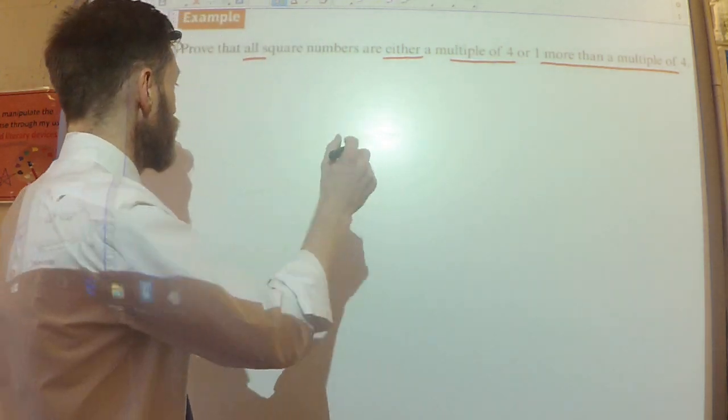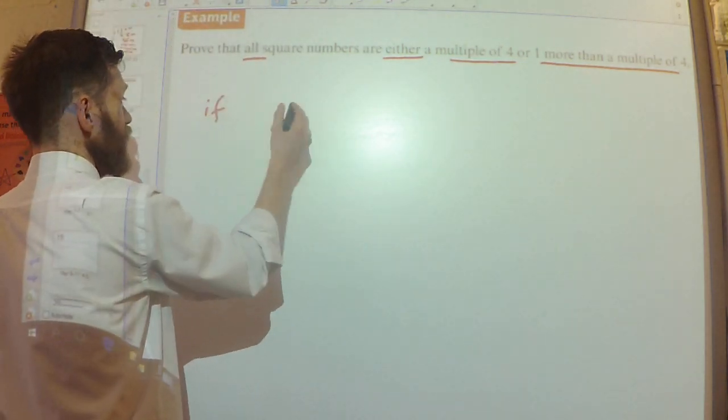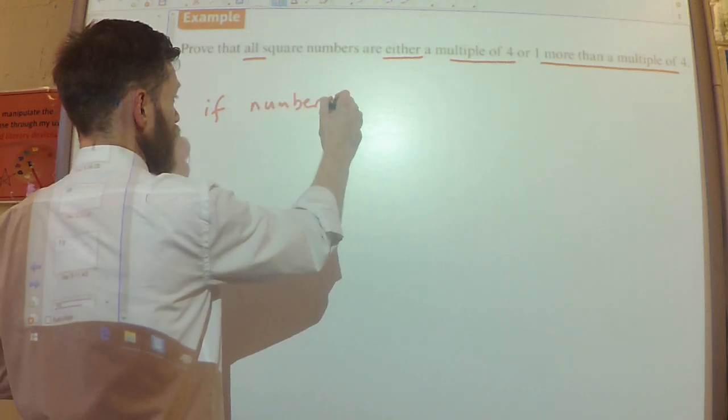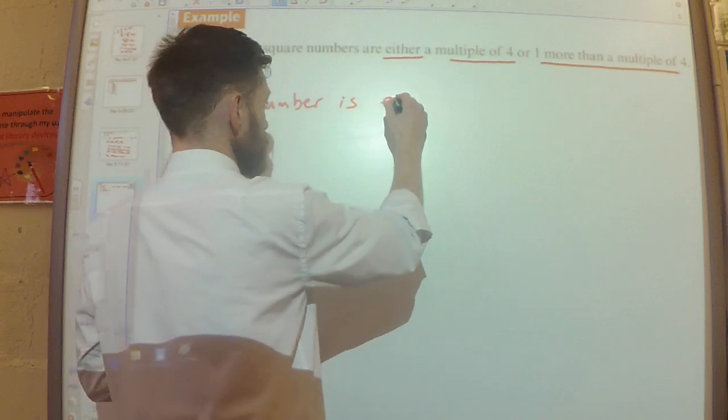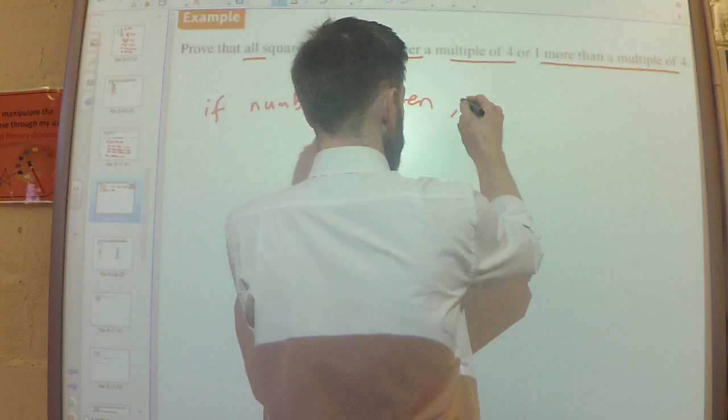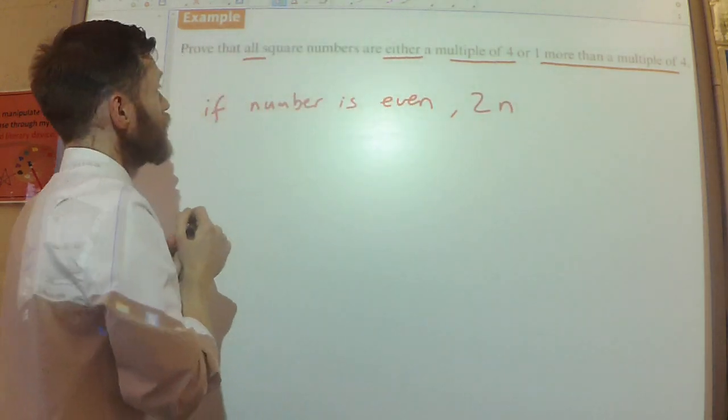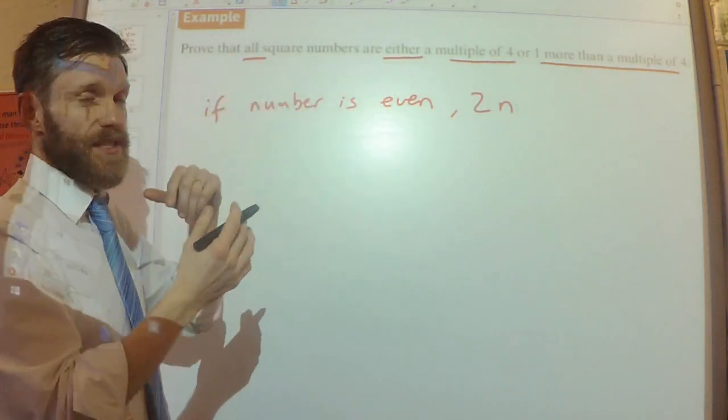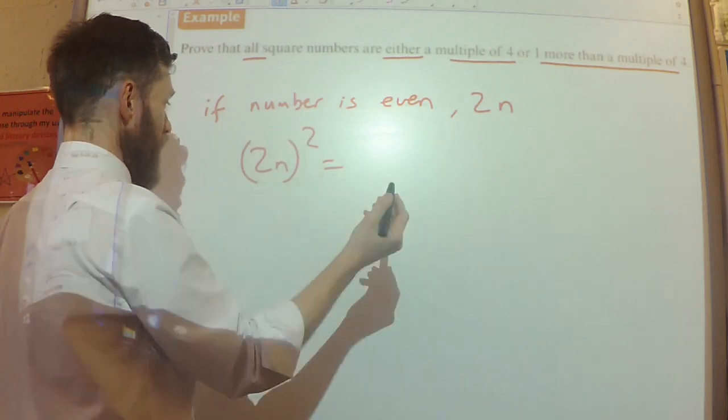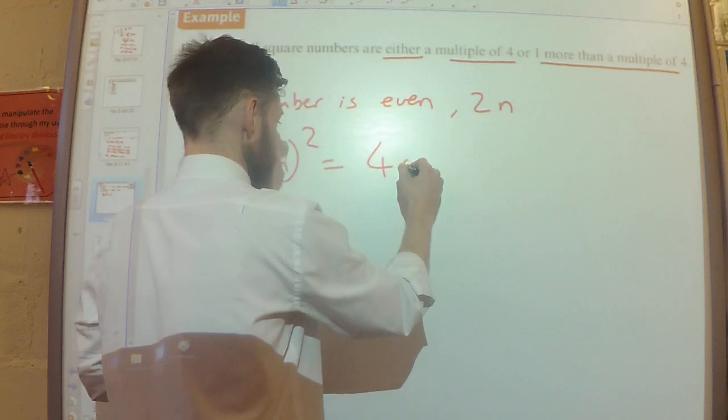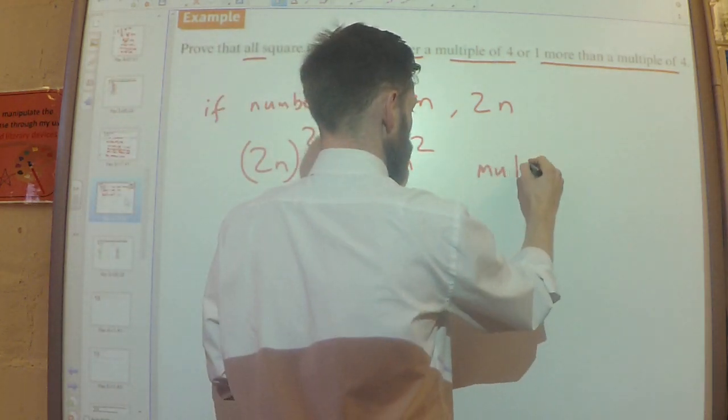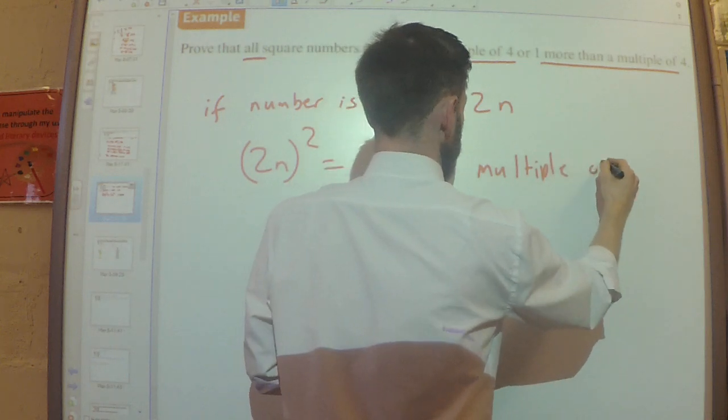So, if number is even, I can write an even number as 2n. So, if I make it a square number then, so 2n squared, well, that's going to be 4n squared. Okay. And that's a multiple of four.